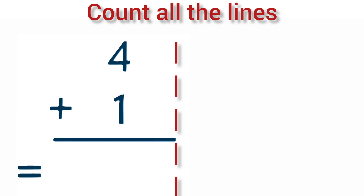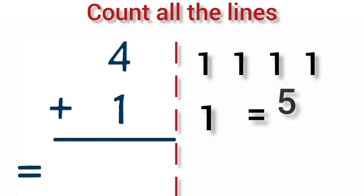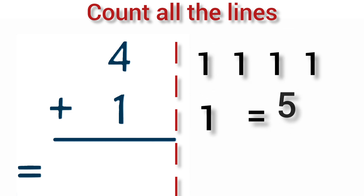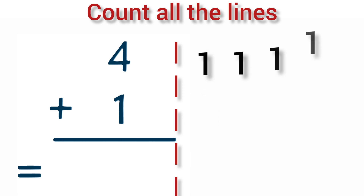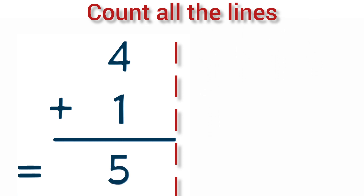Add 4 plus 1. 4 lines plus 1 line is equal to 5. So, 4 plus 1 is equal to 5.